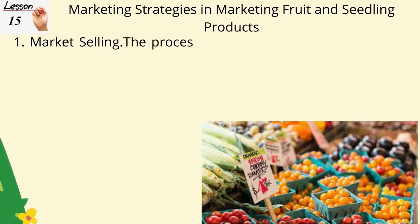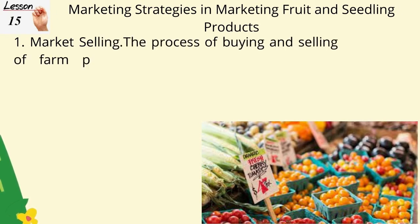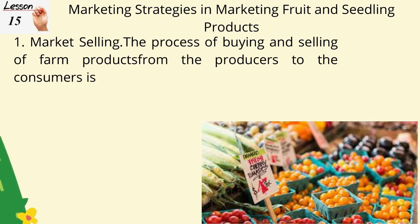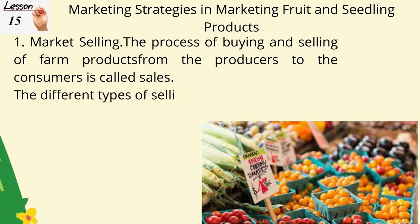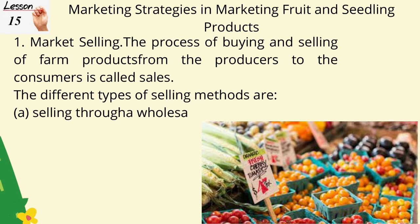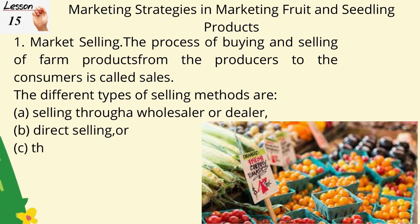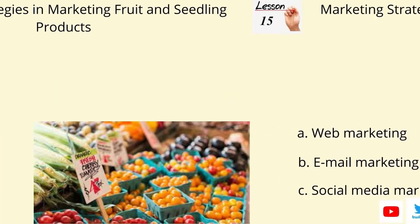Marketing strategy 1 — Market selling: the process of buying and selling farm products from producers to consumers is called sales. Producers like farmers or fruit growers commonly go to the marketplace to sell their produce. The different types of selling methods are: (a) selling through a wholesaler or dealer, (b) direct selling, or (c) through cooperatives.